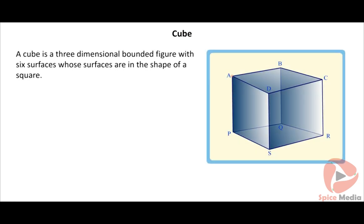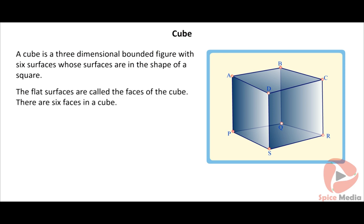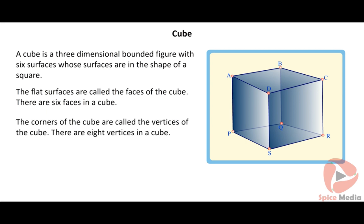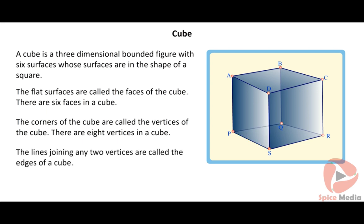A cube is a solid which is bounded by six surfaces; each surface is in the form of a square. The flat surfaces are called the faces of the cube. The corners of the cube are called the vertices, and there are eight vertices in a cube. The lines joining any two vertices are called the edges of a cube.